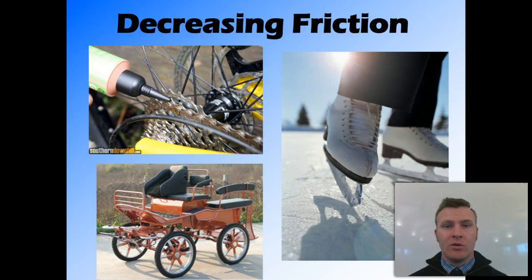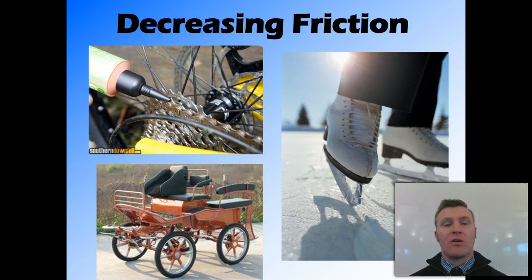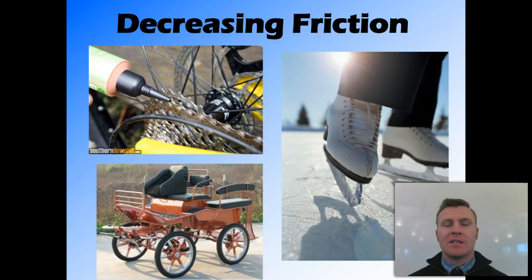Another thing we can do to decrease the amount of friction is, rather than just dragging an object along the ground, we can put wheels on the object. Because the wheels roll rather than drag, it means that the amount of friction caused by the object is much less.